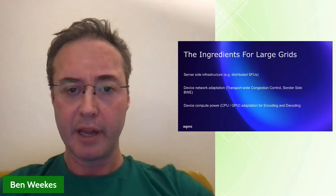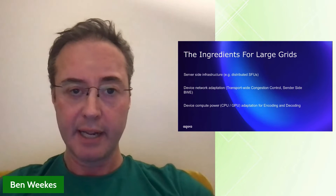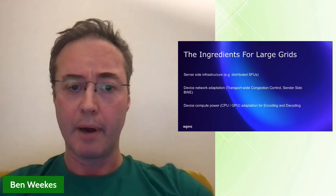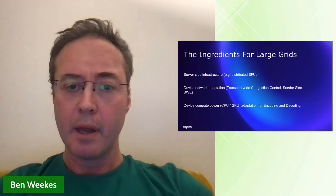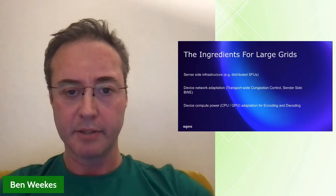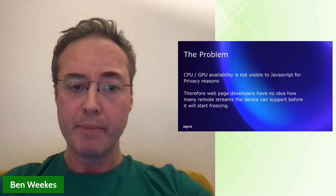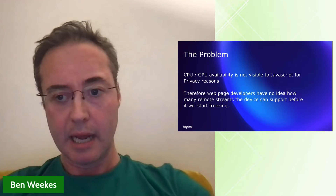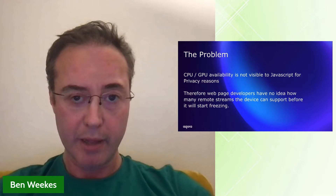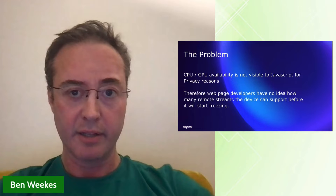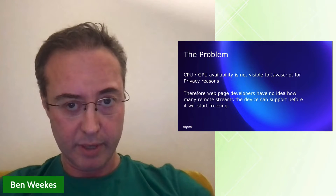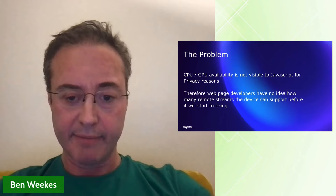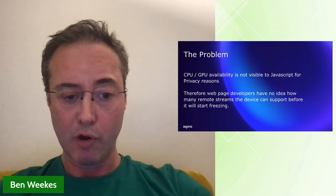Compute power is needed for both encoding your local camera and also for decoding and rendering each of the remote streams from other users. Depending on the hardware, this comes from a mixture of CPU and GPU. But when it comes to adapting to its limits, there's always been a huge piece of the puzzle missing. CPU and GPU availability is not visible to JavaScript in the web browser for privacy reasons. It's impossible to find out what exact machine hardware the person is running on, and there are no JavaScript events to let you know when resources are running low. Therefore, developers have no idea how many remote streams the device can support before it starts freezing.